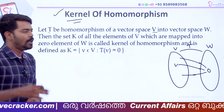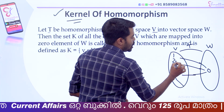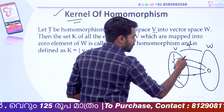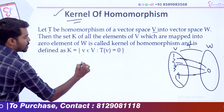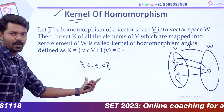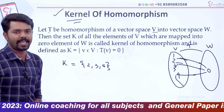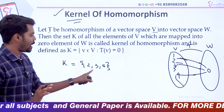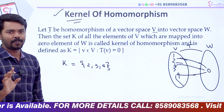Clearly, if the image is zero, T equals 0 — this is the kernel. From the domain, elements 1, 2, 3 — if the image is 0, those elements form the kernel of T.